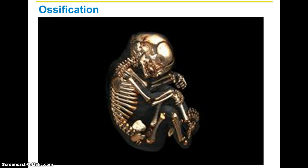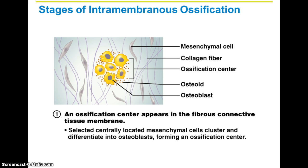There are four main steps. The first step is an ossification center appears, located inside of the fibrous connective tissue membrane. You've got your ossification center in the middle, mesenchymal cells which are the embryonic cells, collagen fibers, osteoids which is unmineralized bone matrix — basically a pre-osteocyte — and your osteoblasts, which are the bone-building cells. That's step one: making an ossification center.